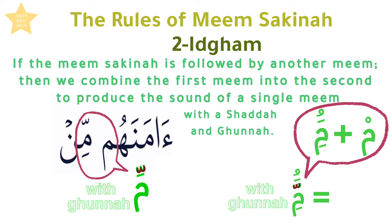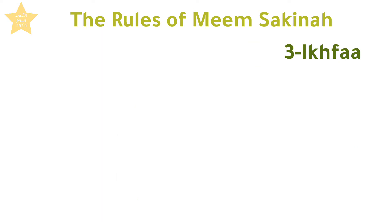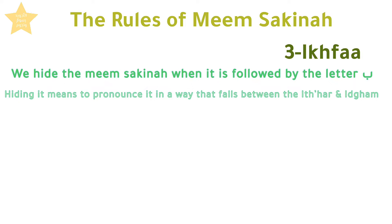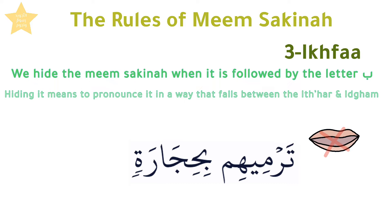The third rule is Ikhfa. We hide the Meem Sakinah when it's followed by the letter Ba. Hiding it means to pronounce it in a way that falls between the Iẓhar and Idgham. We don't separate the lips completely when pronouncing the Meem, nor do we press them tightly together.